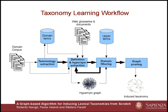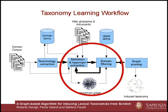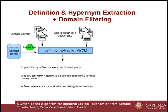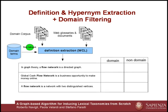We now describe the definition and hyponym extraction and domain filtering phases. For each term in the initial terminology, for example 'flow network,' we mine the domain corpus and the web, searching for definitional sentences. Several definitions can be found for a target term such as 'flow network.' However, many of these will not pertain to the domain of interest. To discard such definitions, we weight each definition candidate according to the ratio of domain terms contained therein over the total number of terms in its bag of words.